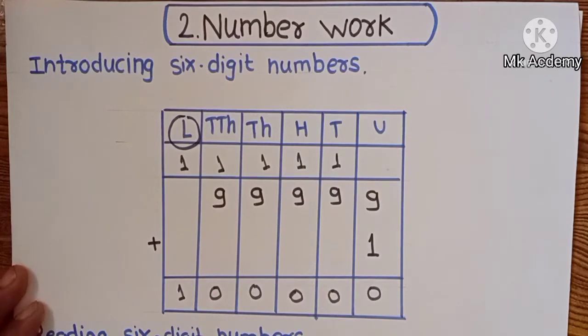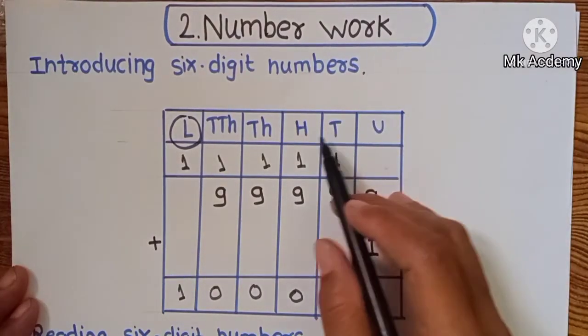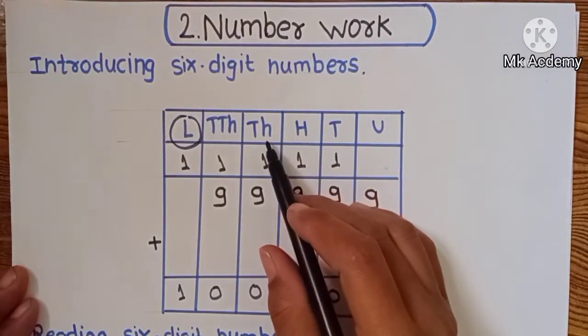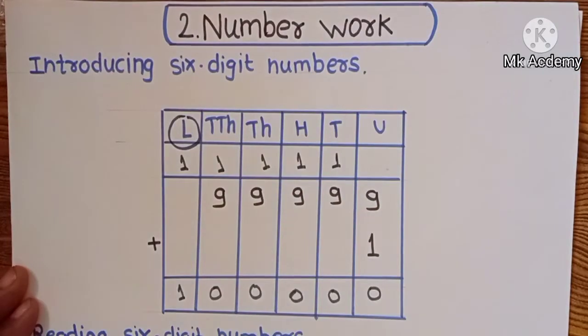The place values are: unit, 10, 100, 1,000, 10,000, and lakh.